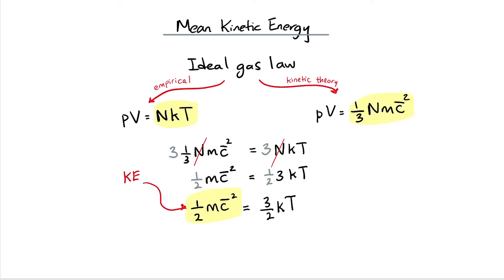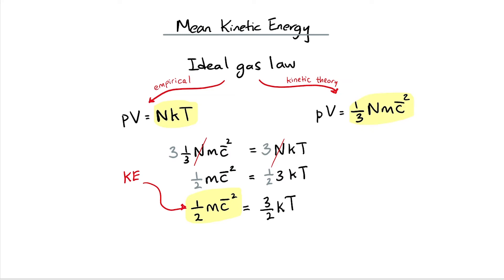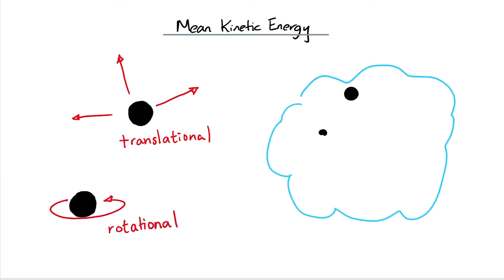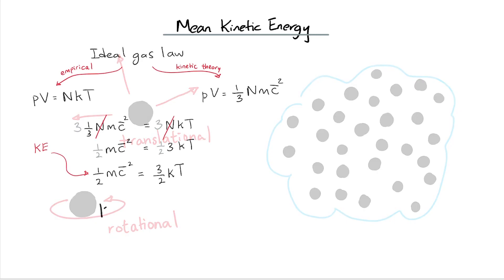This equation only accounts for the translational kinetic energy of an ideal gas molecule. It does not take into account rotational kinetic energy. Since the volume of a gas has n number of molecules, to find the total energy of the gas, we need to multiply by n.